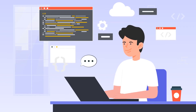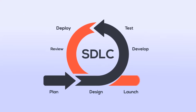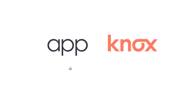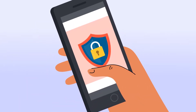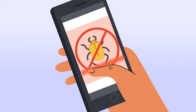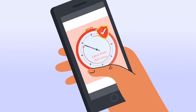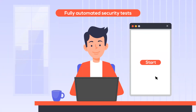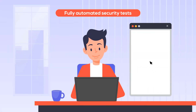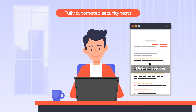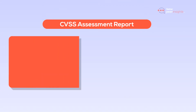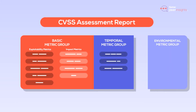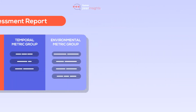Not all security tools reduce your developer's burden, and most of them don't fit in your SDLC without disrupting it. That's until Appnox — DevSecOps meets a plug-and-play security solution that scans your mobile apps in less than 60 minutes, no matter what size. With Appnox, use AutomationScript and run fully automated security tests against 130 plus test cases. Get a comprehensive CVSS standard vulnerability assessment report with just a few clicks.